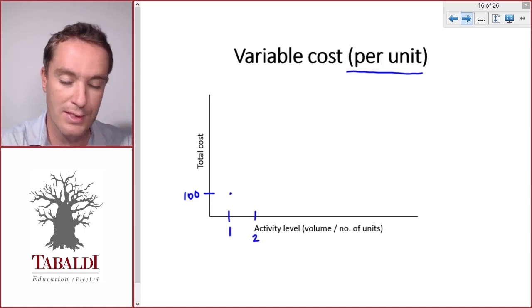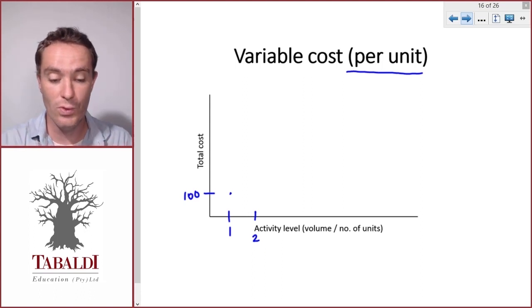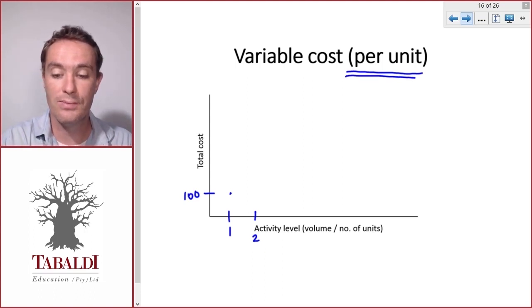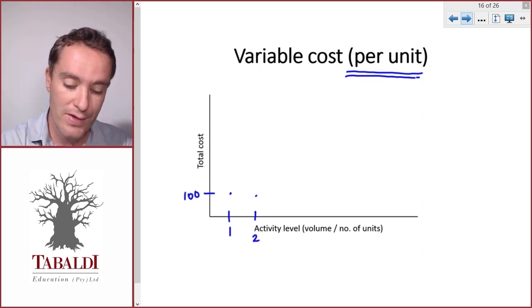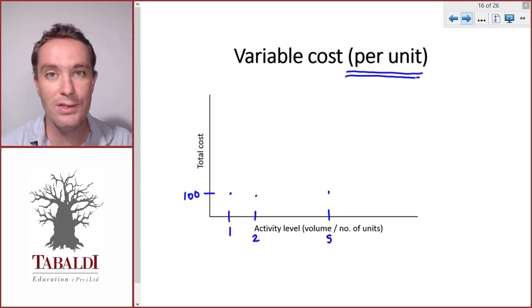What if we make two tables? Remember they both look the same, they both use the same amount of wood, so on a per unit basis it'll still be a hundred per table. Now even if we make five tables it'll still only cost us a hundred per table.